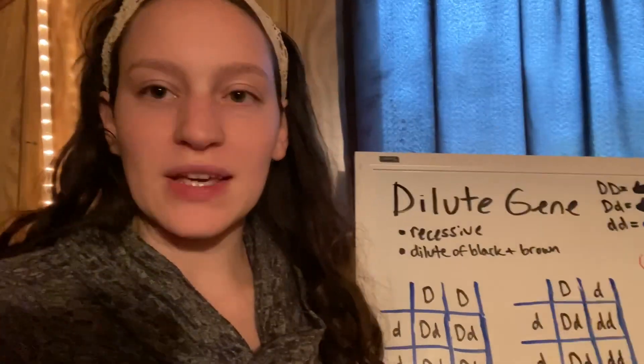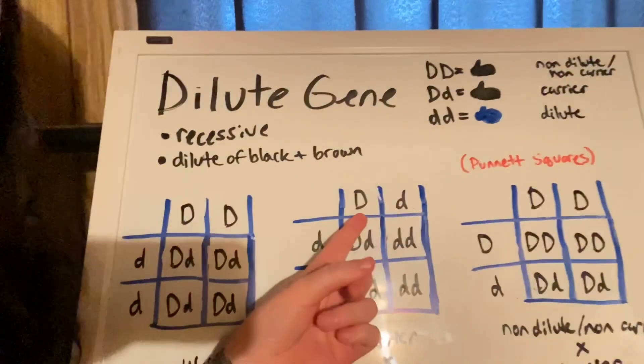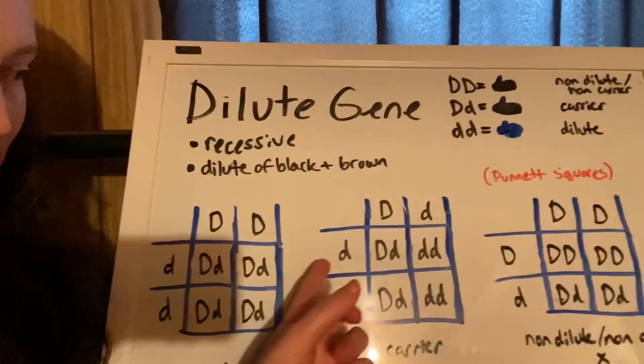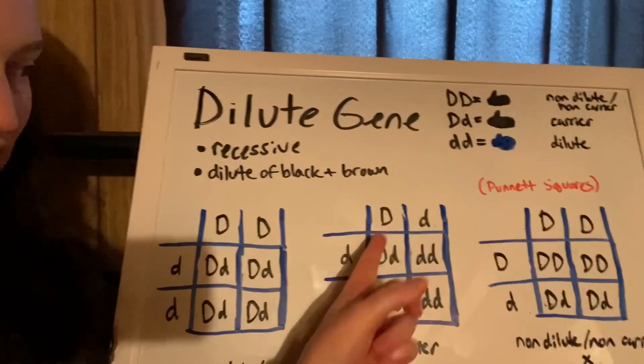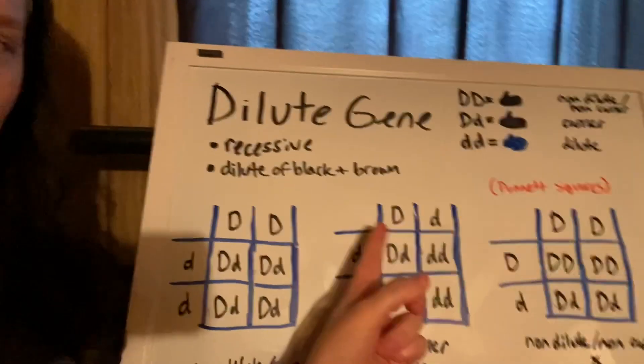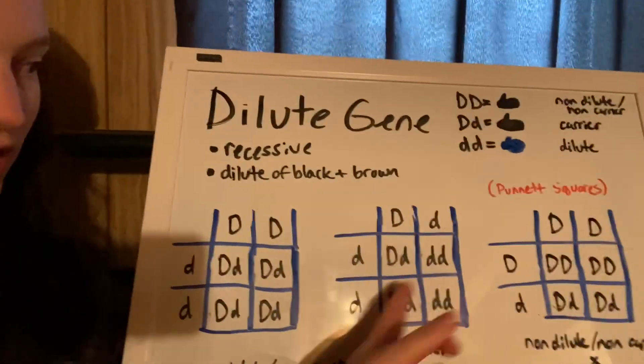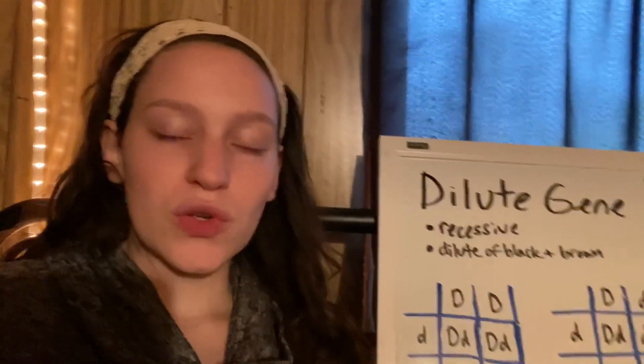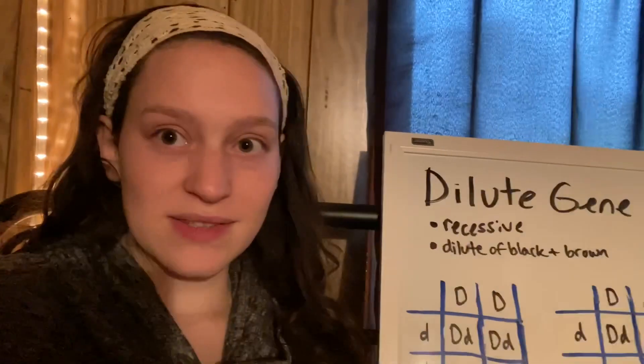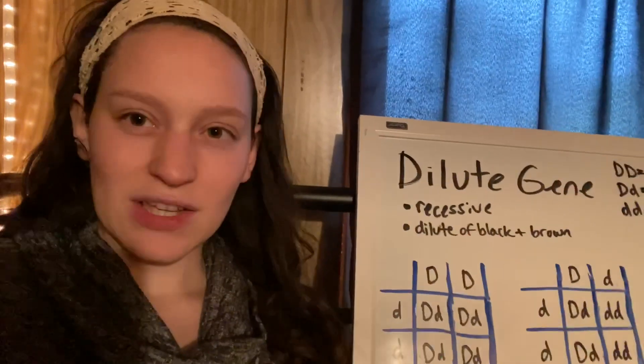I wanted to add one more combination of breedings — a dilute carrier to a dilute carrier. Picture capital D, lowercase d, crossed with capital D, lowercase d. What you're going to get is 25% non-carriers, 50% carriers, and 25% dilute. So you can actually get a dilute from two dilute-carrying parents, even if they are not dilute themselves. That's one that kind of surprises people.